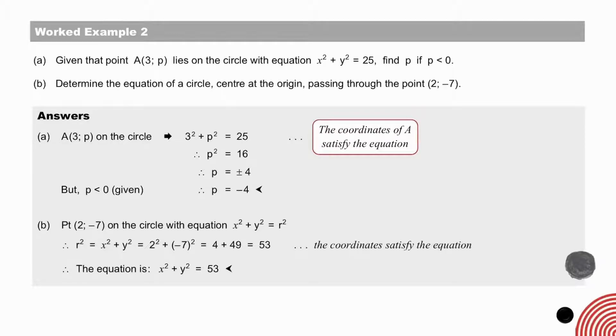In B, the same principle, but let's turn the equation around. R squared equal to x squared plus y squared, to determine the value of r squared, which is 53. And therefore, the equation is x squared plus y squared equal to 53. Note, the radius itself is the square root of 53.